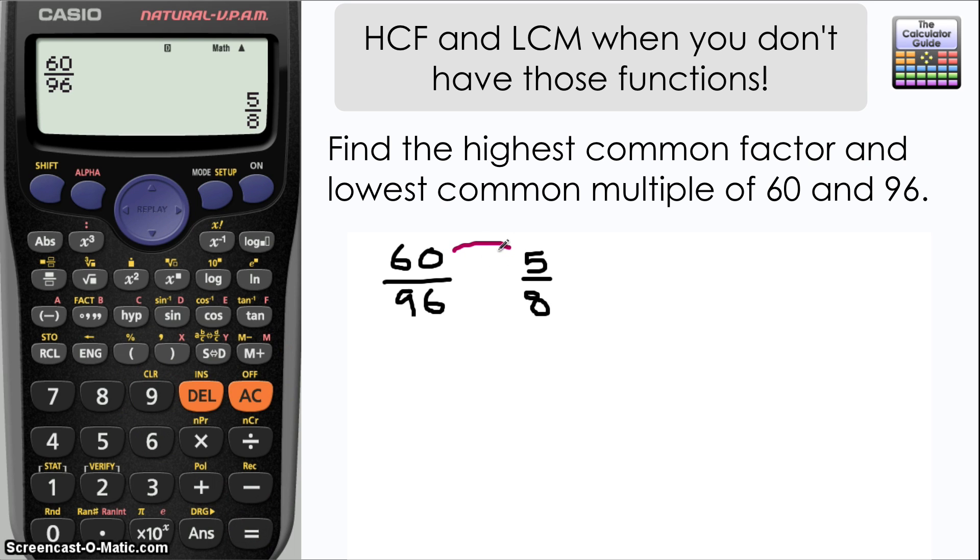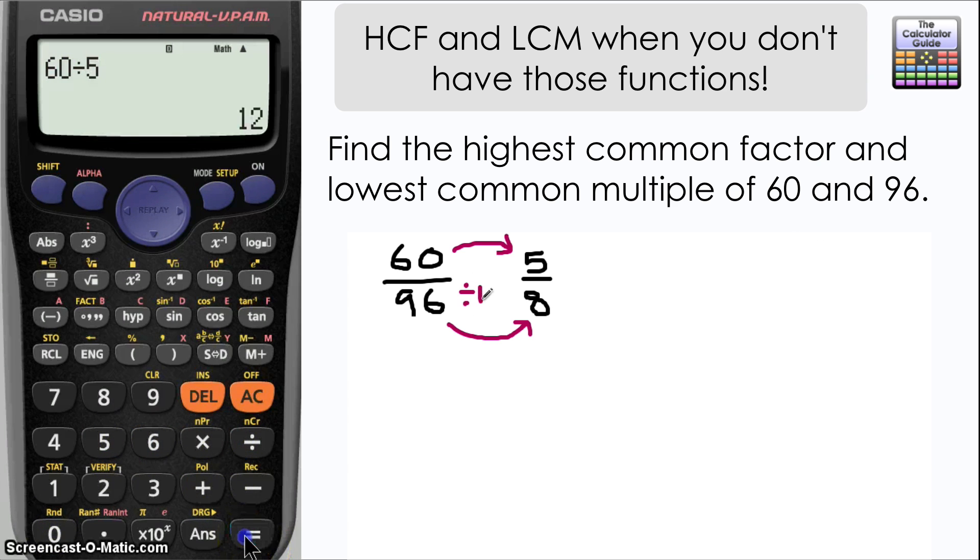There is a common factor that takes 60 to 5 and the same factor that takes 96 to 8, and that factor is 12. We can work it out by doing 60 divided by 5 on the calculator. If we do the same, 96 divided by 8, that's also 12, and that is in fact the highest common factor of 60 and 96.